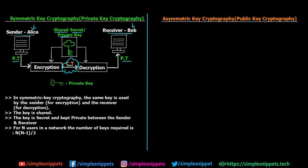In symmetric key cryptography, the same key is used by the sender for encryption and the receiver for decryption, and vice versa. The key is shared but not public — it is shared only between the two communicating parties and kept private, which is why it's called private key cryptography. For n users in a network, the number of keys required is n × (n − 1) / 2. This formula is important — you may be asked to calculate the number of symmetric keys required given n users.